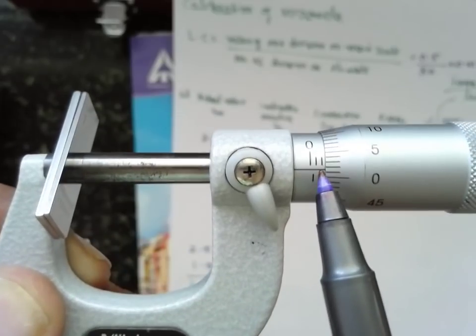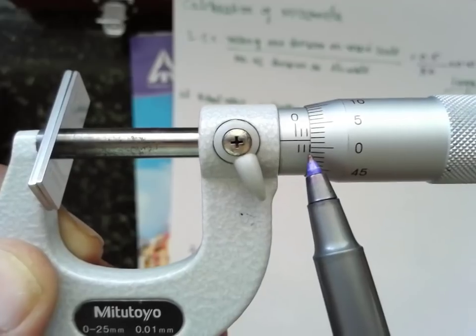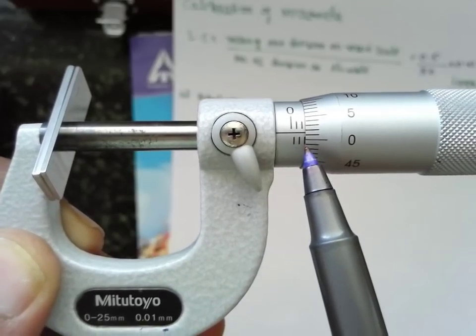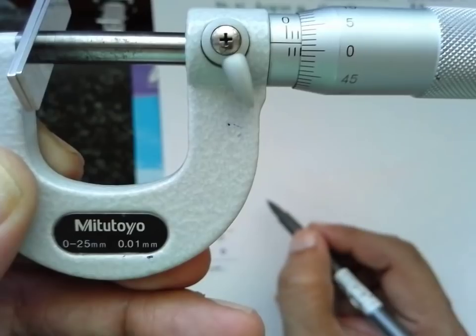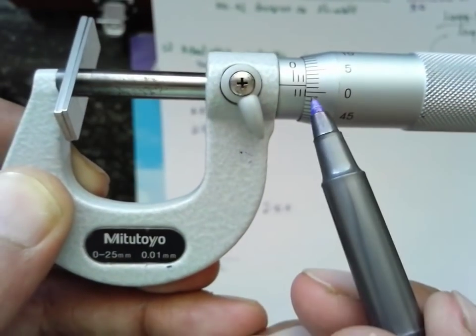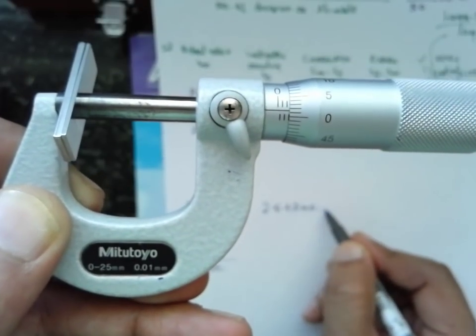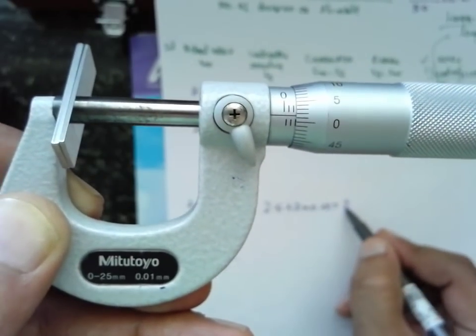The value will be 0.5, 1, 1.5, 2, 2.5. The 2.5 is visible. Therefore, 2.5 plus, it is between 1 and 2, I will take as 2. 2 into 0.01. If you measure it, it will be 2.52.